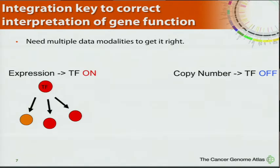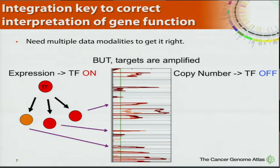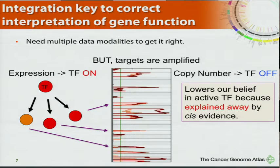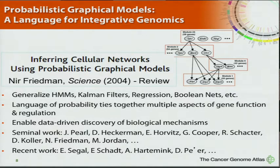The idea is to look at neighbors. In the previous example, we inferred the factor was on because of its downstream targets. But suppose I ask for GISTIC plots — copy number data — and all of those targets are amplified. I could explain away the overexpression via amplification, and I'm less likely now to think the factor's on. Maybe still slightly over my prior expectation, but not as high, because I have another piece to explain the upregulation of those targets via a cis-regulation type of machinery.